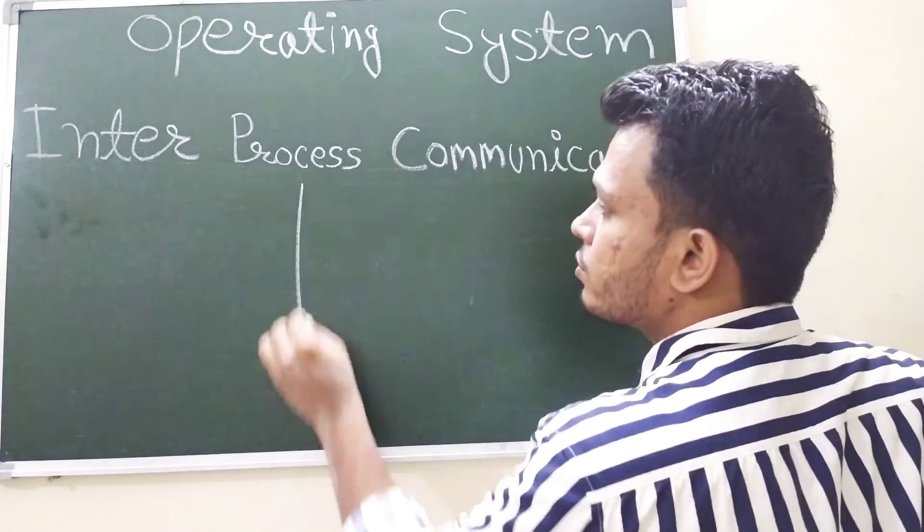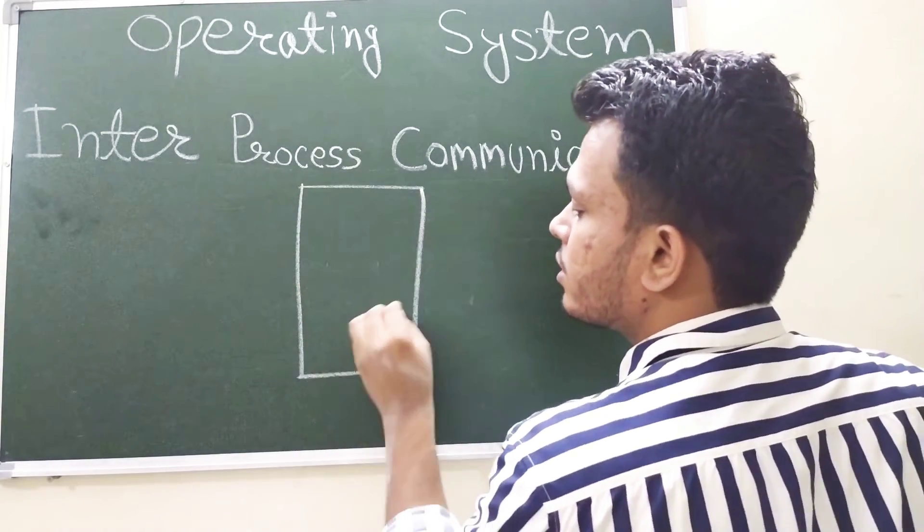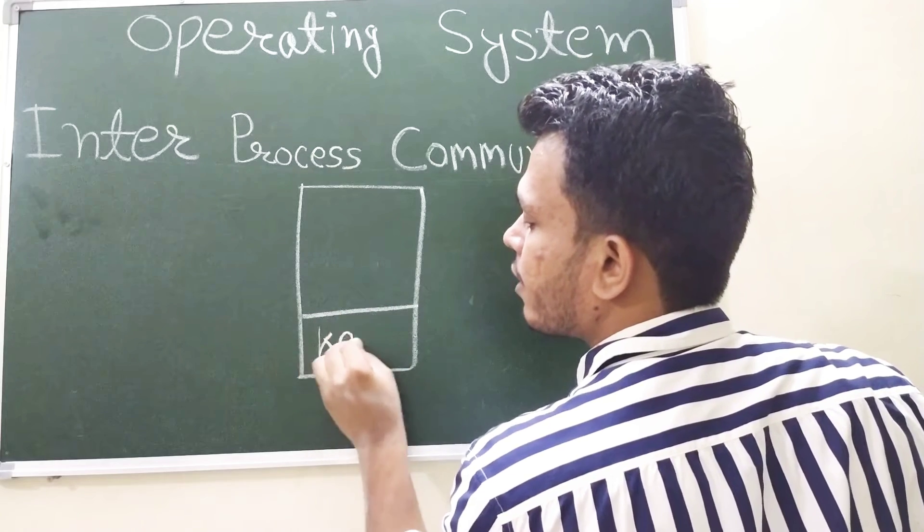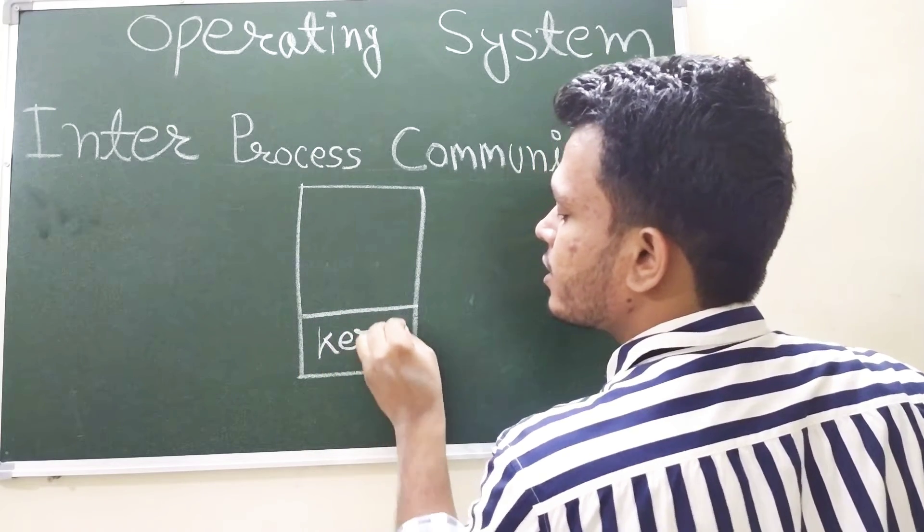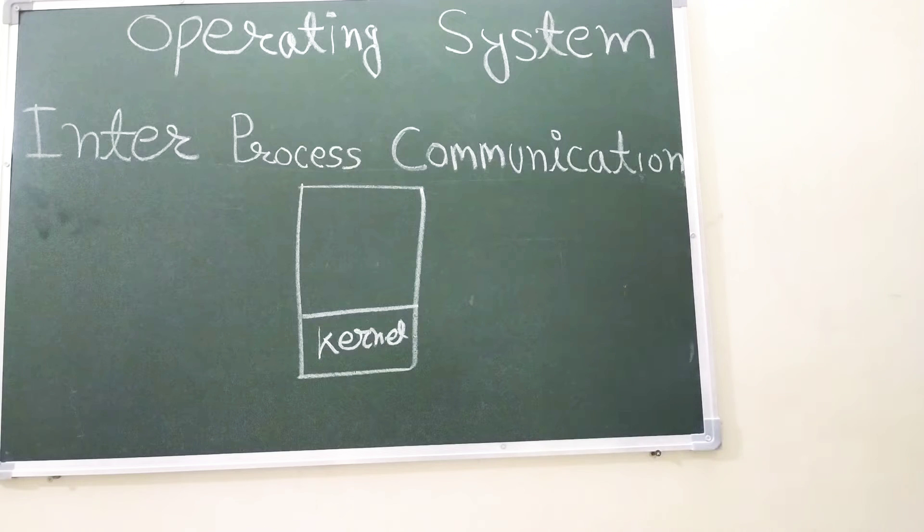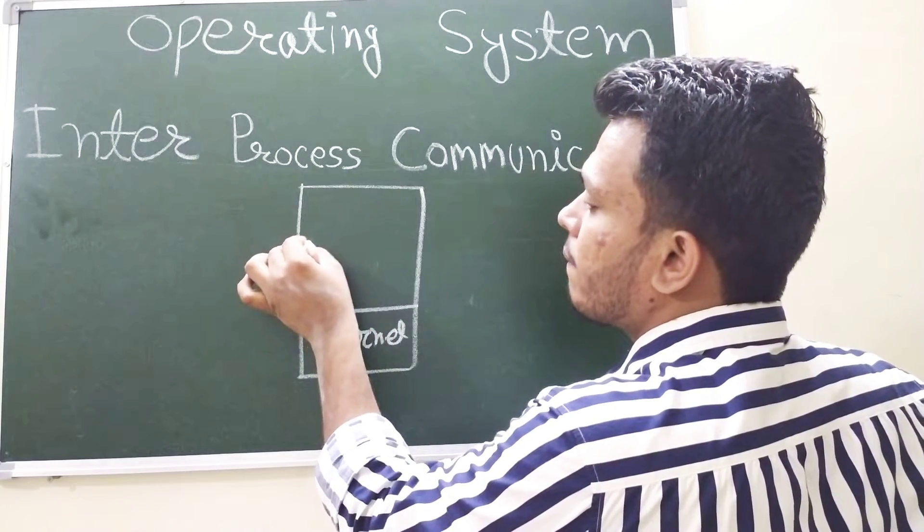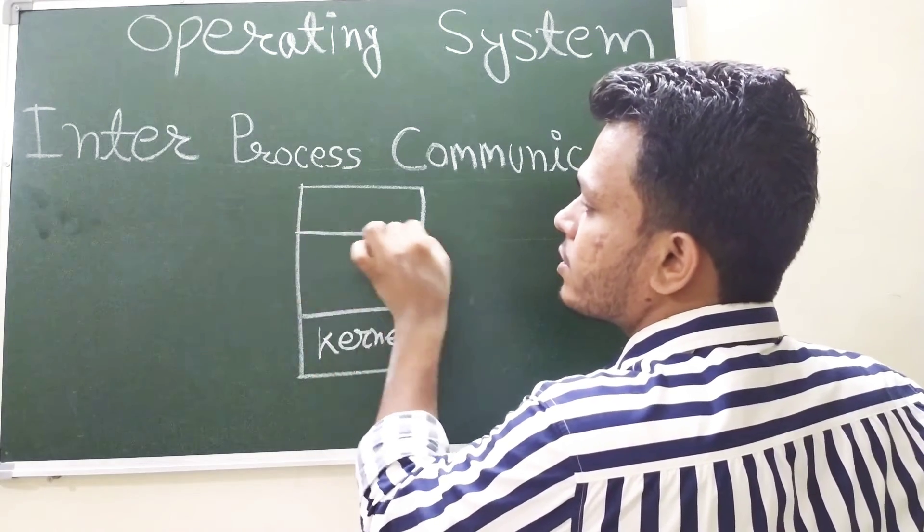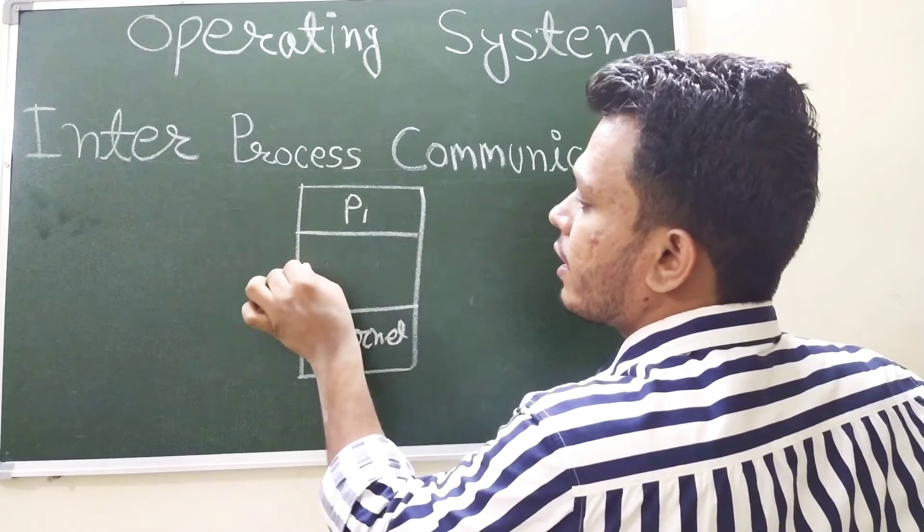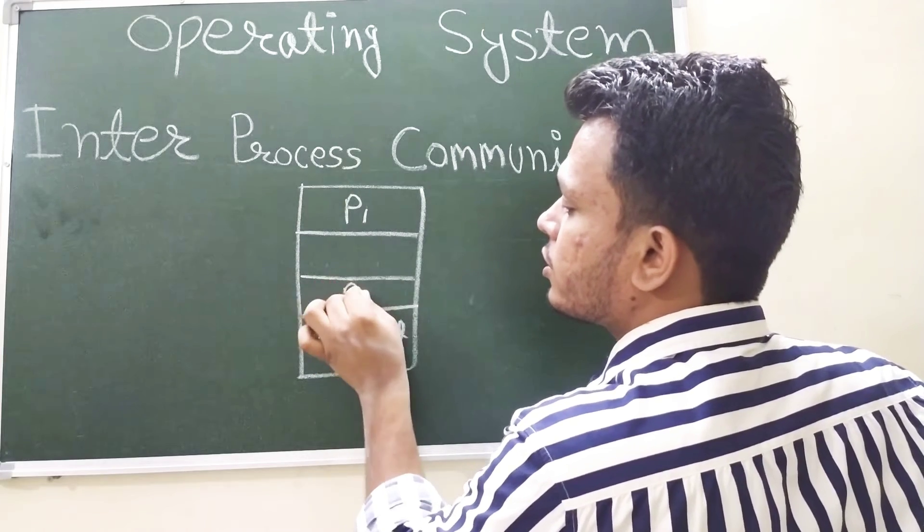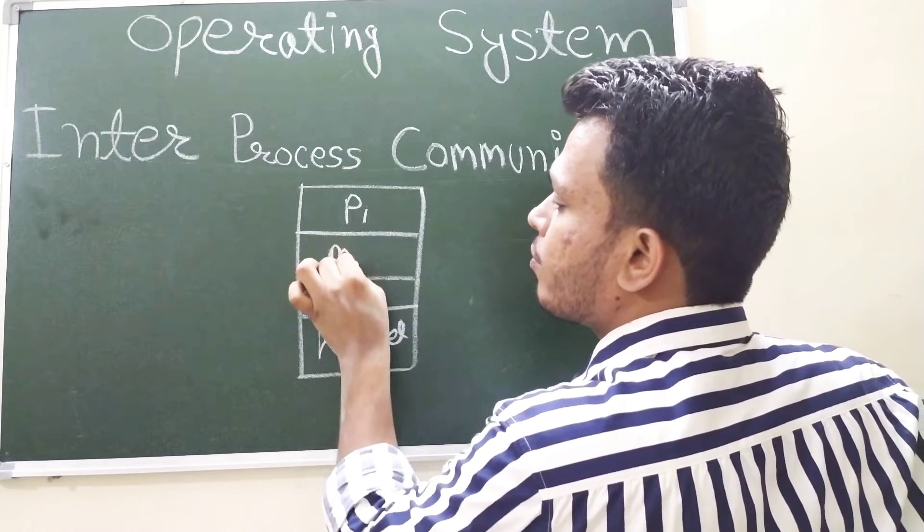Let's discuss the first one. Suppose this is your memory block or you can say this is your kernel part. Kernel is residing in this particular block. And in this part and this part, there is a process P1 and this is shared memory space.